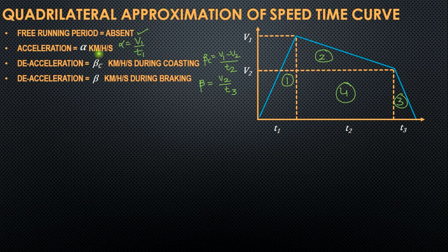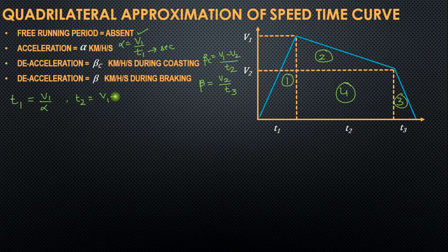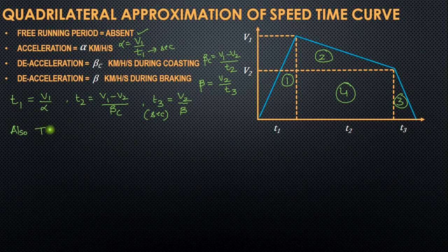Note that since α is in kilometres per hour per second, if velocity is mentioned in kilometres per hour then T1 should be mentioned in seconds. Similarly, T2 and T3 will be in seconds, where T1 = V1 / α, T2 = (V1 − V2) / βc, and T3 = V2 / β, all in seconds. Also, T is the total time taken by the locomotive to travel from point A to point B, so T = T1 + T2 + T3.